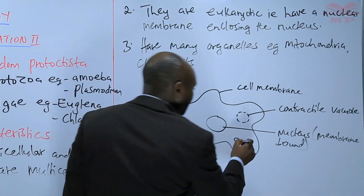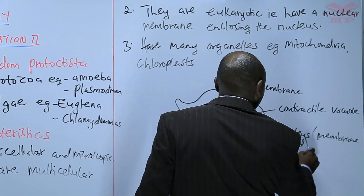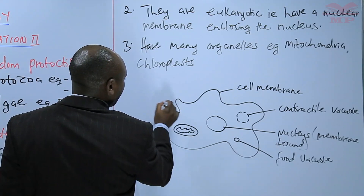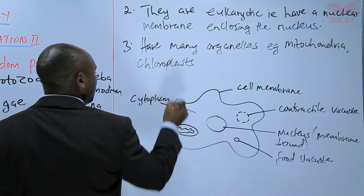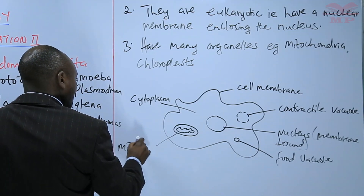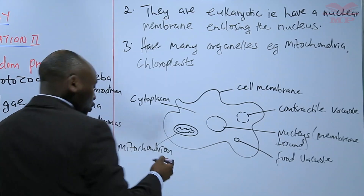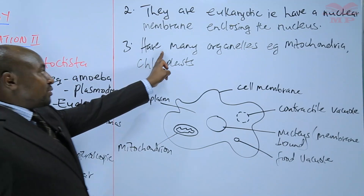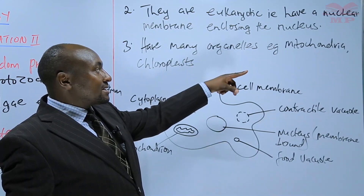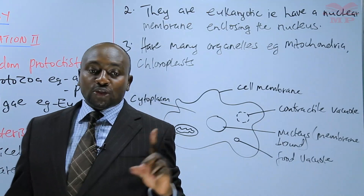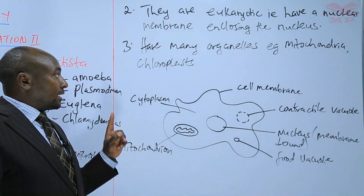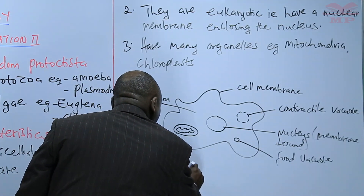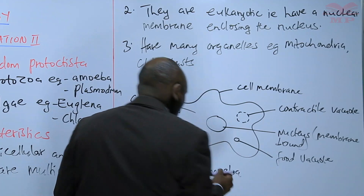We also have the food vacuole, the cytoplasm — the fluid inside — and the mitochondrion. Note that mitochondrion is singular; when there are many, they are called mitochondria. As mentioned in point three, they have many organelles such as mitochondria. This is the general structure of an amoeba.